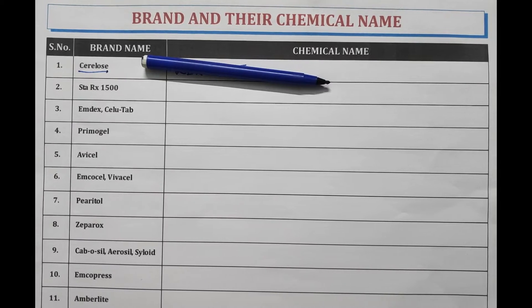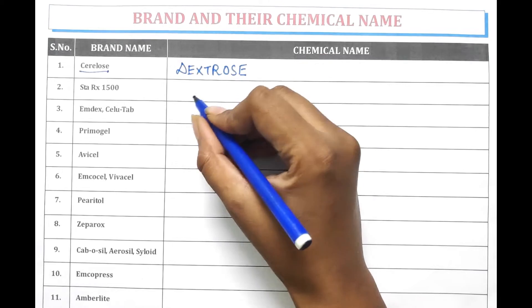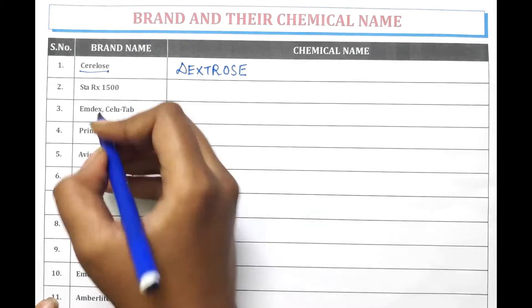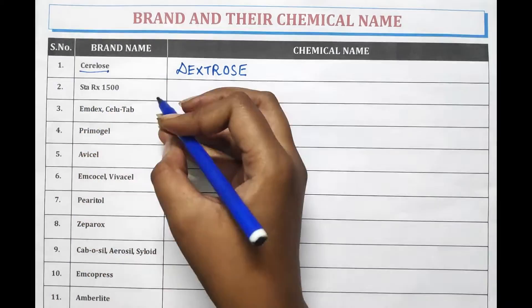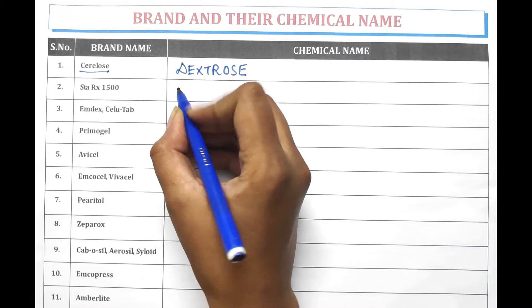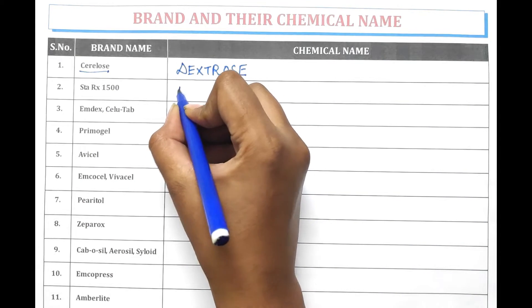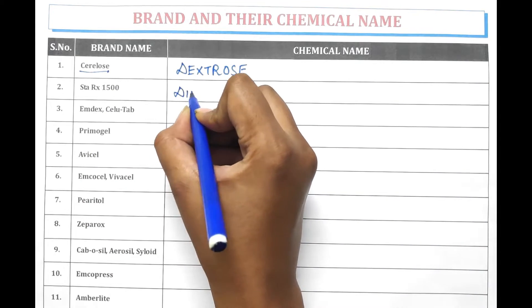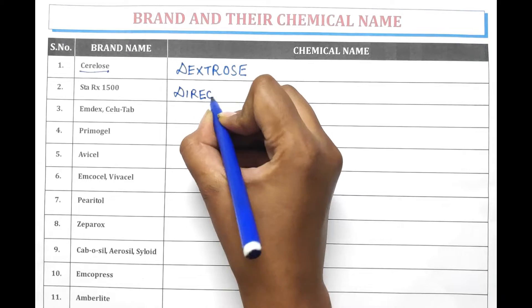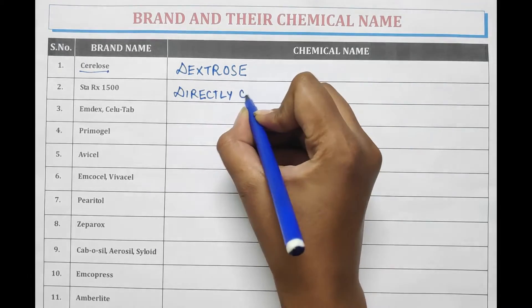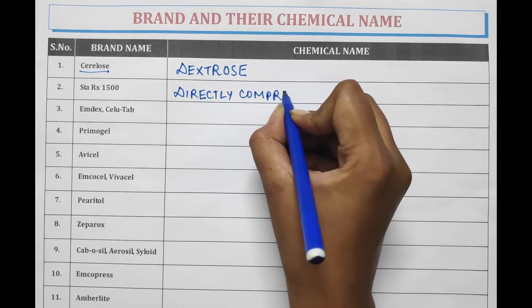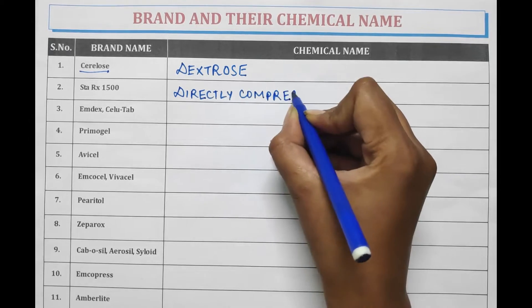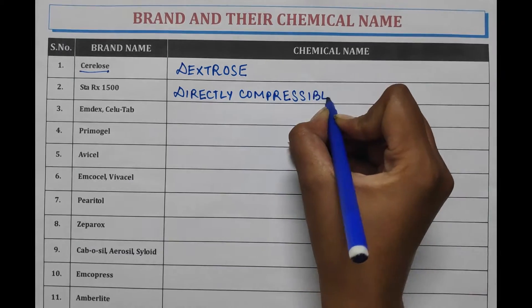Cellulose is the brand name of Dextrose. Star RX 1500 is the brand name of Directly Compressible Starch.